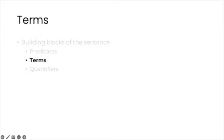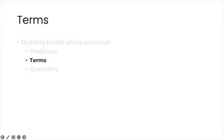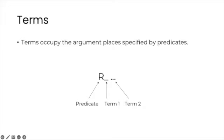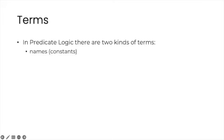Now let's talk about terms. Terms occupy the argument places specified by predicates. So a monadic predicate must be followed by one term, a dyadic predicate must be followed by two terms, and so on. In predicate logic, there are two kinds of terms. There's names, also known as individual constants, and there's variables.